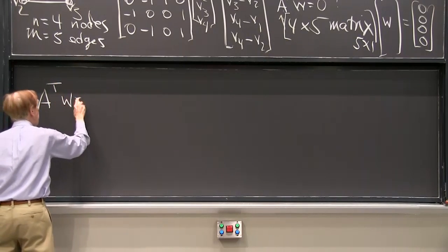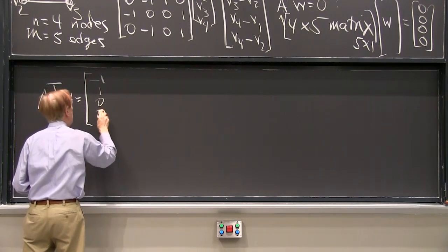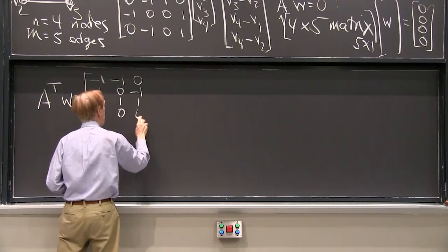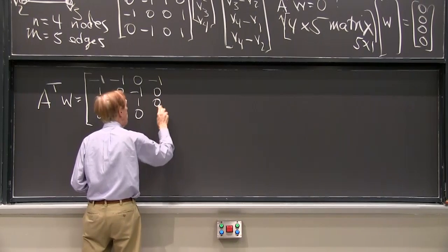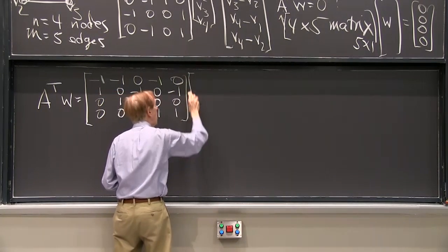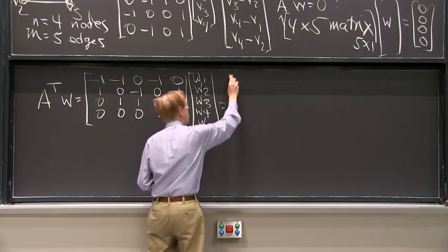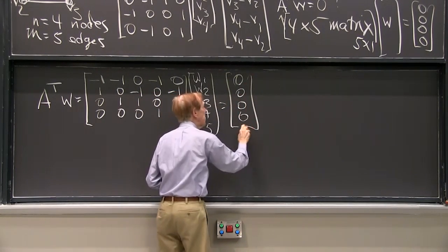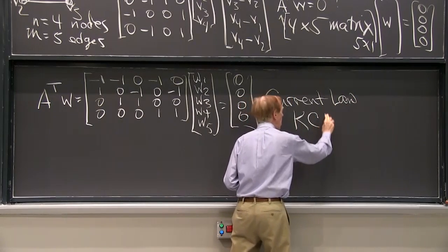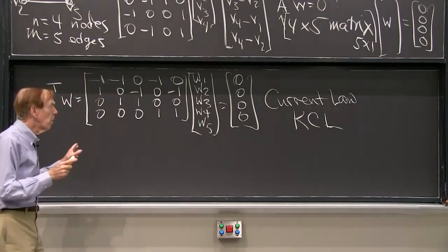So let me go to the next board and copy down A transpose. So I'm looking now at A transpose w. So now it will be 4 by 5. So that first row becomes a column. The second row becomes another column in the transpose. The third row, another column. The fourth row is that column. And the fifth row is that one. And that will multiply w1, 2, 3, 4, and 5 to give 0, 0, 0, 0. And that's called the current law, Kirchhoff's current law. And what is that law? What does it mean?